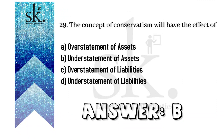The concept of conservatism will have the effect of — if you remember the conservatism concept under accounting conventions, we said that all anticipated expenses and losses have to be taken into consideration, as well as understatement of assets if any. Therefore the answer will be B — understatement of asset.